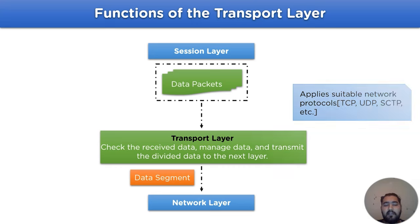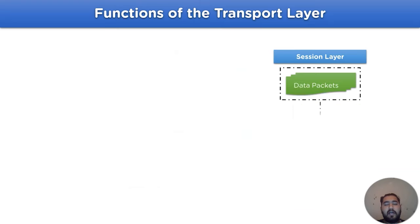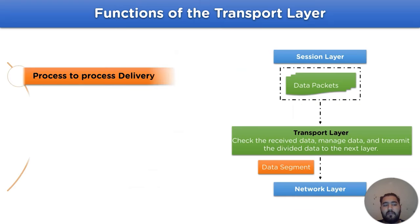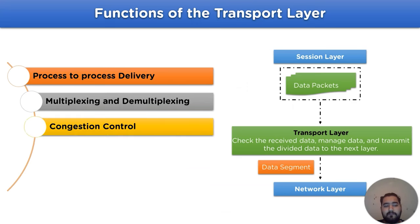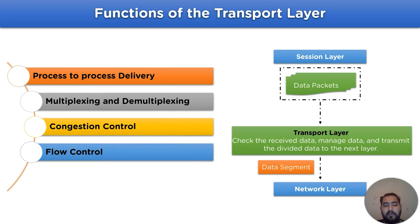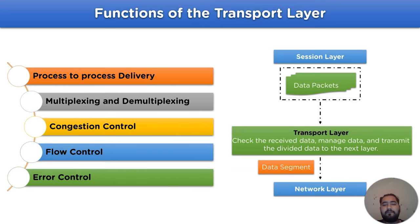The functions available for the transport layer are: process-to-process delivery, multiplexing and demultiplexing, congestion control, flow control, and error control.